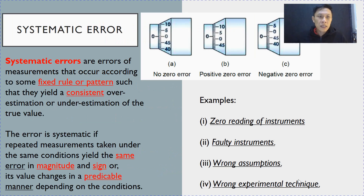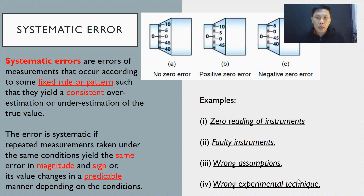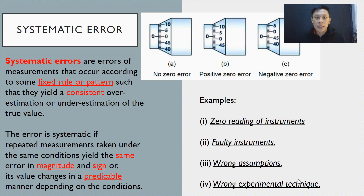Firstly, for systematic error: systematic errors are errors where it is local according to some fixed pattern or rule, such that the keyword is a consistent type of error. So, if repeated measurements yield the same error in magnitude and sign, or if the value is predictable, then these errors are classified under systematic error.